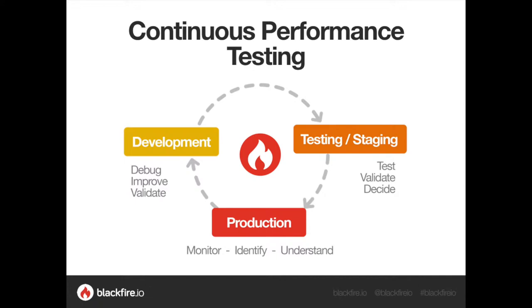By the time you reach test and staging, it's going to be a great tool to help you validate your code changes and make sure that you comply with your performance expectations and service level agreements. And of course, by the time you reach production, it is where you will have the real traffic, real data, and real context. It can be about detecting simple things such as cache configuration, but in general you need to understand within the real context how your code behaves.